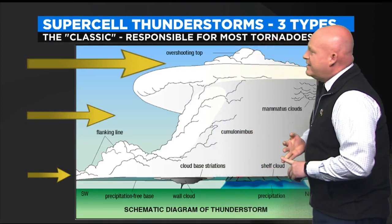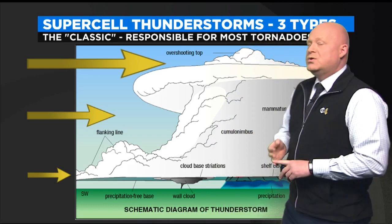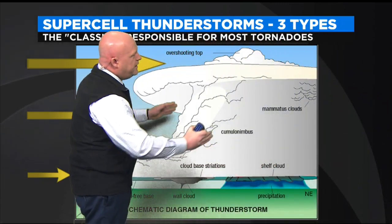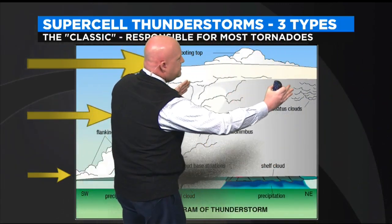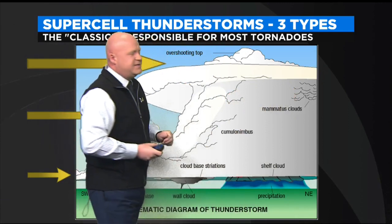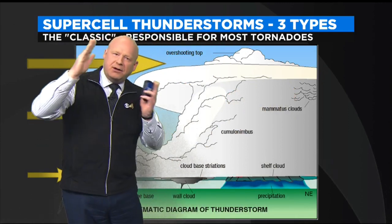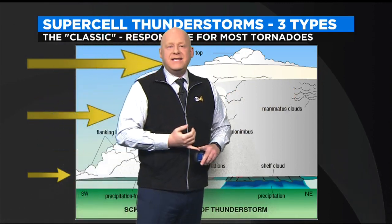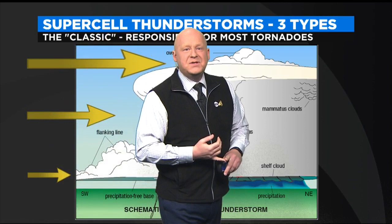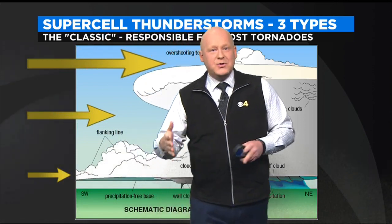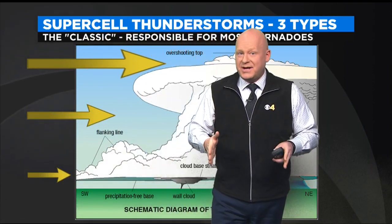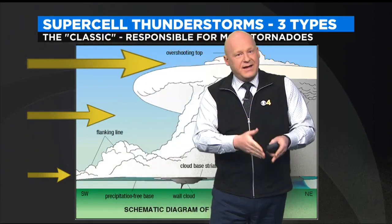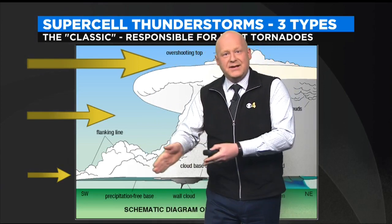And this causes the thunderstorm to begin to rotate or lean. If you look at this drawing, can you see how it is sort of leaning a little bit? It's tilted. And that tilt keeps the updraft and the downdraft separate.